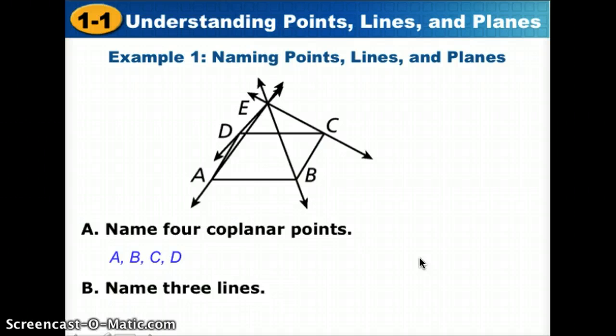If we wanted to name three lines we could come up with numerous answers. But we said that we see no lowercase cursive letters, so we can't use that way of naming a line, but we'll have to use points. We need two points to name a line. So you can use a combination of letters. This line contains point A and point E. So I could call it line AE. I could also name this line that has B and E, or CE, or line DE would be another choice.